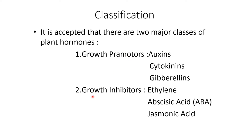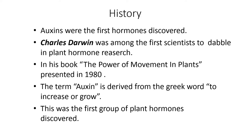One is growth promoters and another one is growth inhibitors. Under growth promoters, auxin, cytokinins, and gibberellins are present. Whereas in the case of growth inhibitors, ethylene, abscisic acid, and jasmonic acid are included.